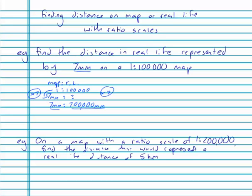And then just convert this to a more sensible measurement. Millimetres to metres, divide by 1,000—700 metres is a pretty good measurement. So, 7mm on the map equals 700 metres in real life. Done.